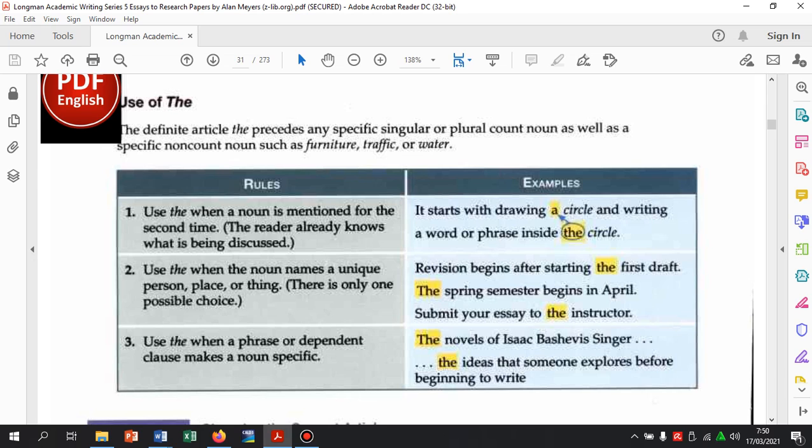Revision begins after starting the first draft. When the noun names a unique person or place or thing, there is only one possible choice. Ketika ada membicarakan nama orang ataupun tempat ataupun benda yang hanya ada satu possible pilihan saja, gunakan the. Revision begins after starting the first draft. First draft ini kan cuma satu. First draft itu cuma satu. Satu namanya first pertama. Nggak mungkin ada draft berikutnya. The spring semester begins in April. Spring ini satu. Nggak mungkin a spring semester nggak ada.